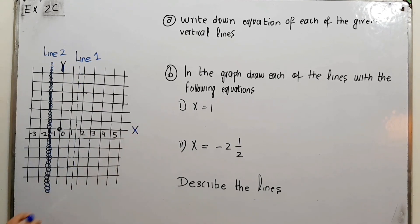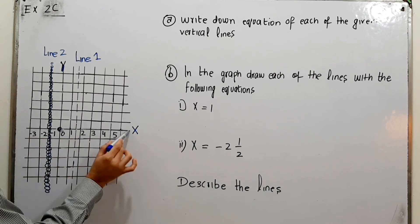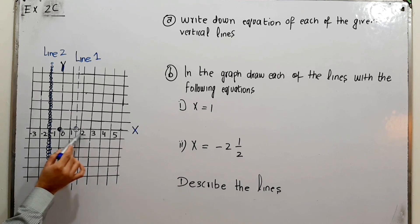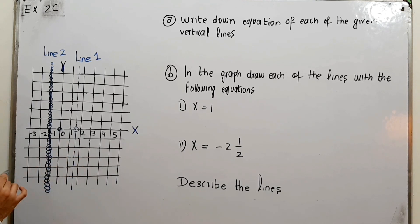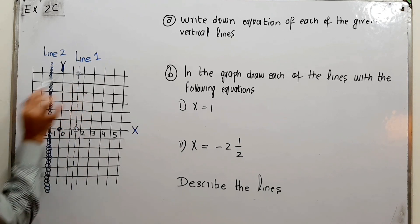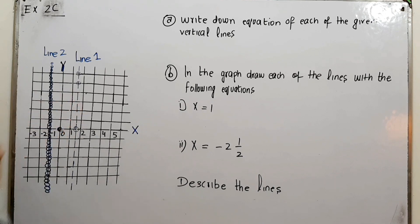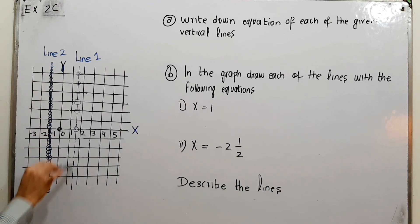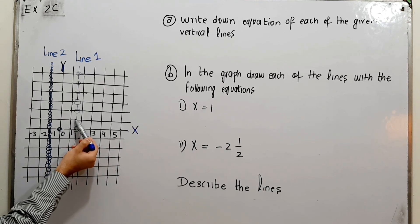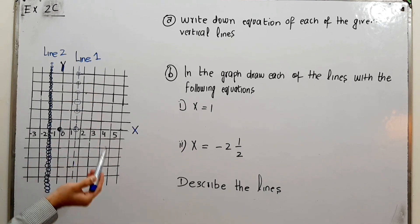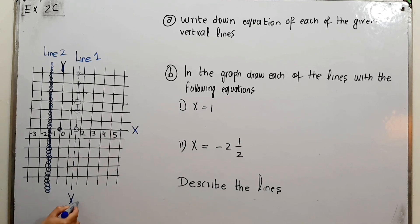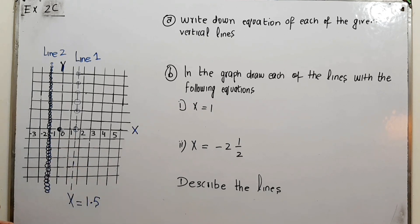Line one is passing through which value on the x-axis? It is passing through the point between one and two, that is 1.5. The value of x at every point on this line is also 1.5 — x is constant throughout the line, whereas y is changing. So the equation for line one is x = 1.5.